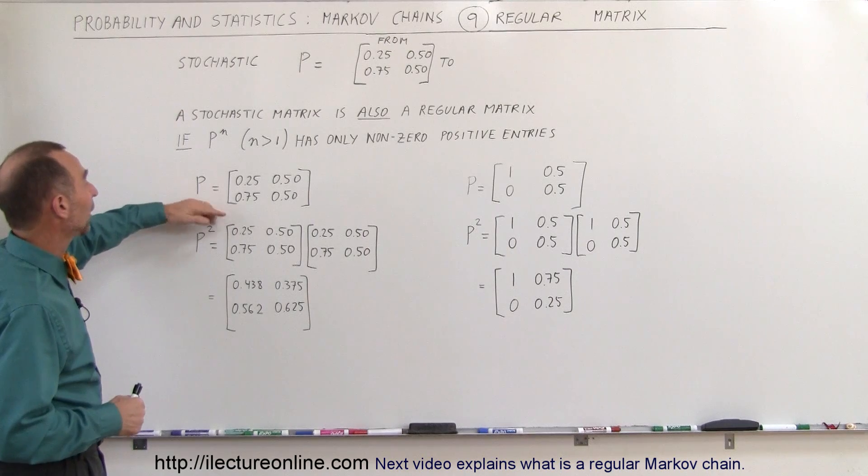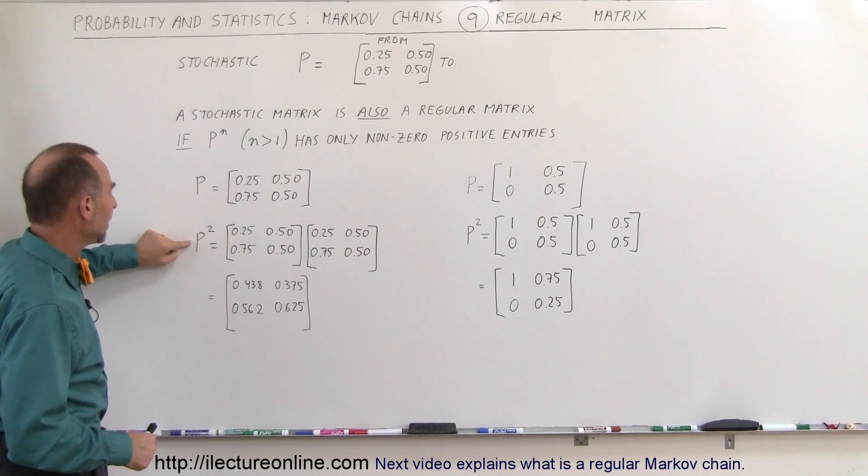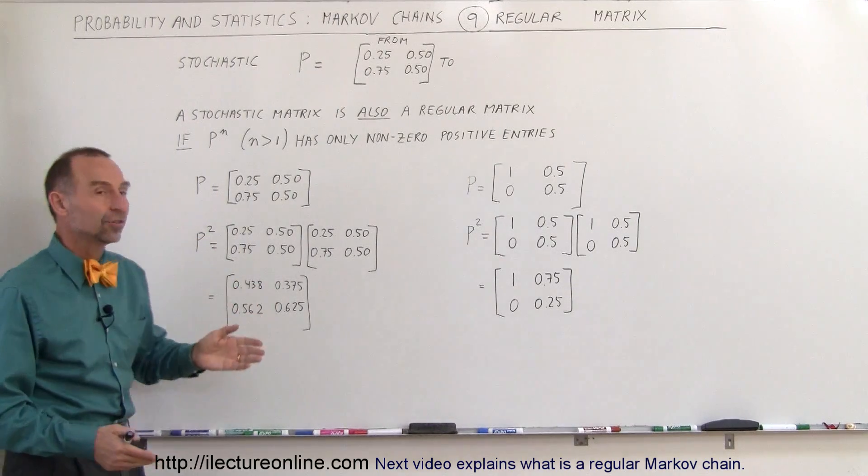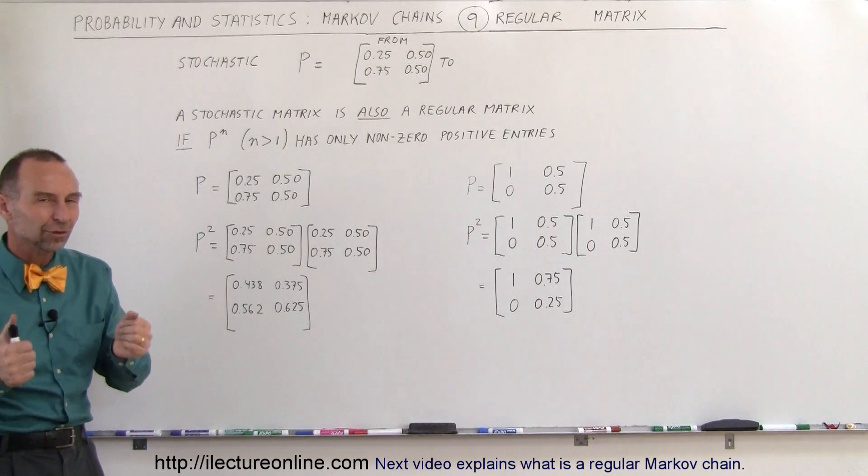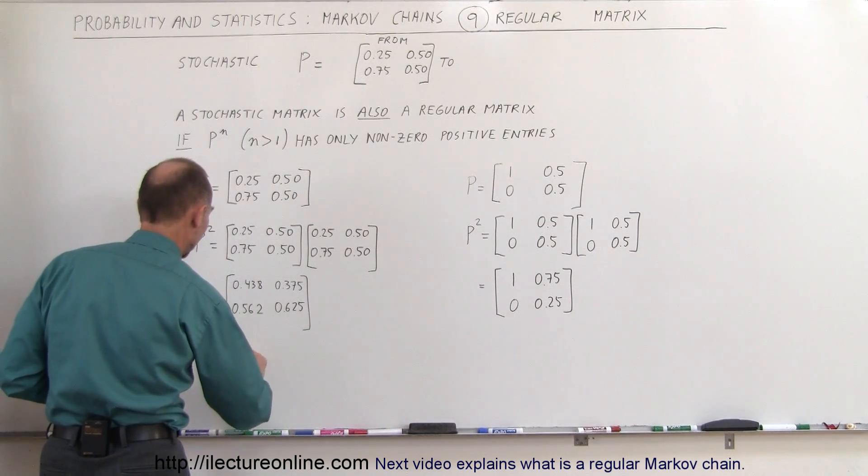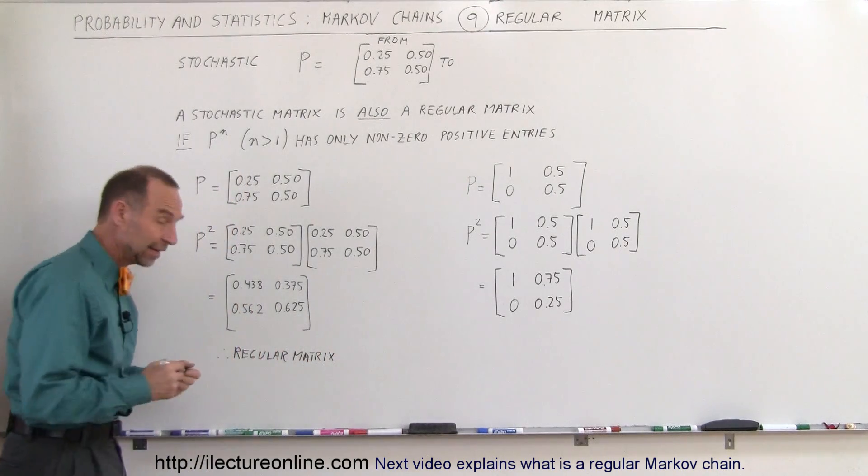So here's an example where if you add the columns vertically you can see they add up to 1, and if we take the matrix to the second power we multiply by itself, we get a matrix where all the elements are greater than 0, they're positive, they're non-zero. So therefore it's also a regular matrix. So it is stochastic and it is regular.